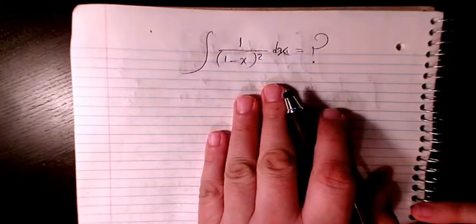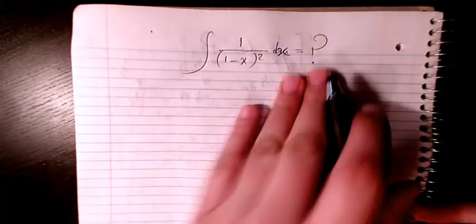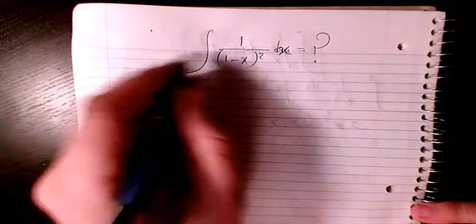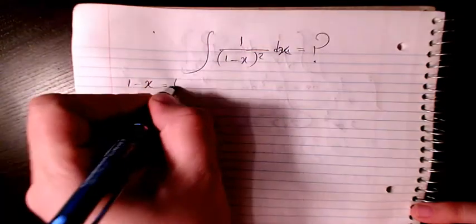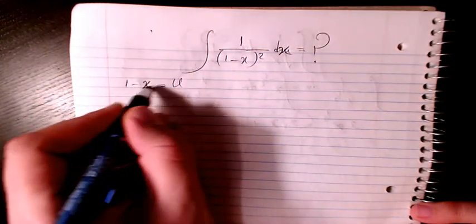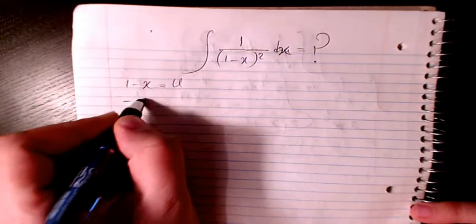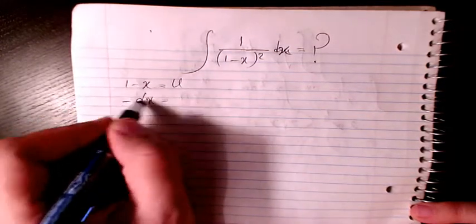I will try to explain it very well. So let's see, here I have a variable change. Instead of 1-x, I can write u, so 1-x equals u. Then negative dx...